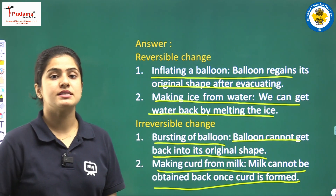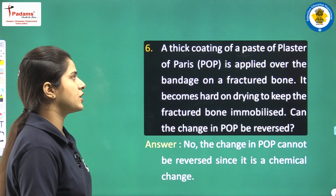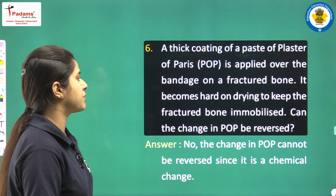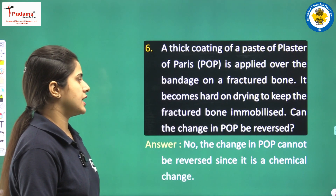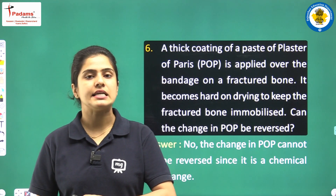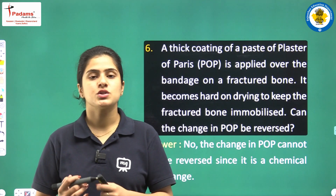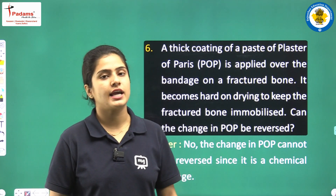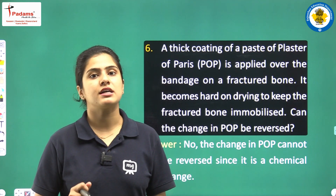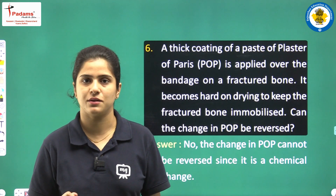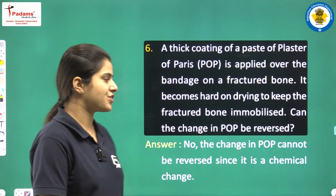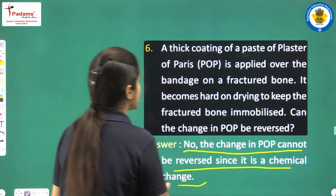Question number 6: a thick coating of plaster of Paris (POP) paste is applied over the bandage on a fractured bone. It becomes hard on drying to keep the fractured bone immobilized. Can the change in POP be reversed? The answer is no, because POP is a chemical product. Usmein jo chemical changes hote hain dry hone ke baad, woh reverse back nahi ho sakta. In that case, hum usko cheera laga ke ya sharp instrument se cut karke nikal sakte hain. The change in POP cannot be reversed since it is a chemical change.